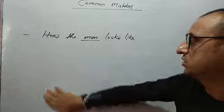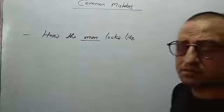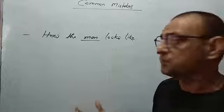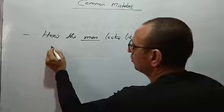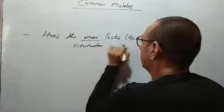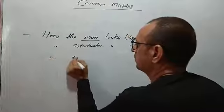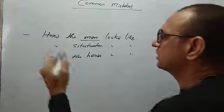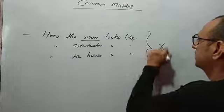The first thing I am going to discuss today: 'How the man looks like.' If we have some opinion about something, we will generally say 'how the man looks like,' or 'how the situation looks like,' or 'how this house looks like.' All these sentences starting with 'how' are grammatically incorrect.